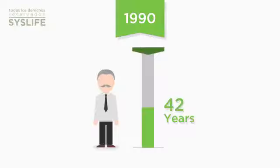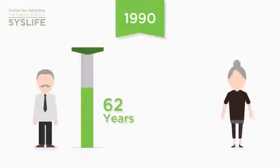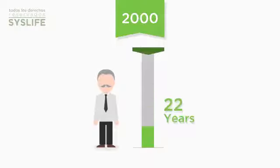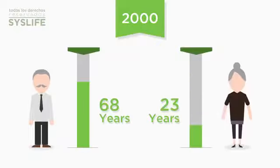By 1990, men and women's average life was 62 and 67 years respectively. By 2000, life expectancy had already risen to 68 years for men and 73 years for women.